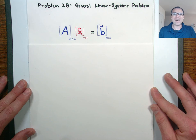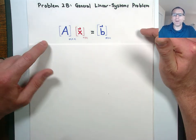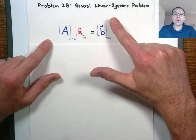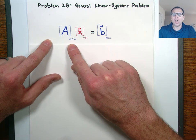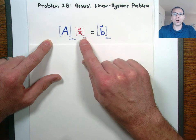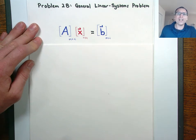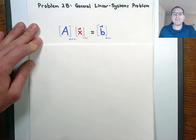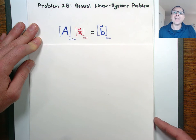What's poppin' y'all? Welcome back. In this video, we're continuing our conversation about the general linear systems problem where we're given a rectangular matrix A, a right-hand side vector B, and we're looking for complete solutions to the system. We're going to introduce a bunch of definitions and formal notation to describe some of the observations we've made in previous videos.